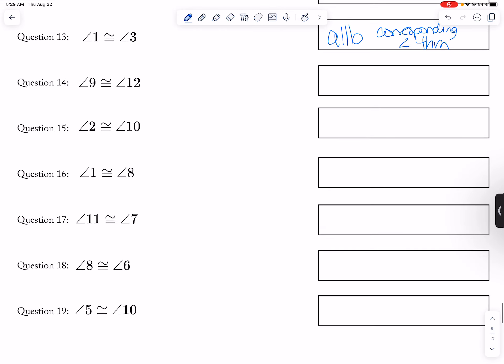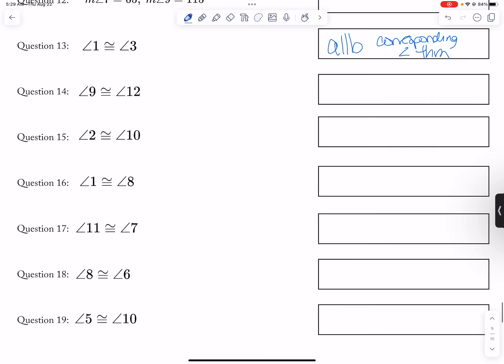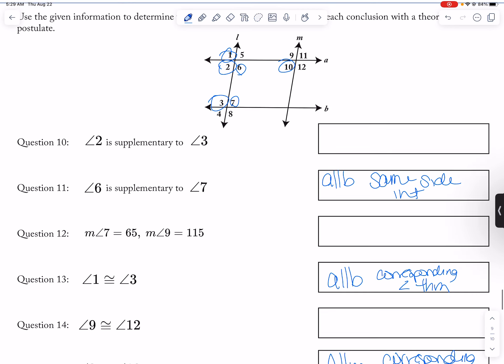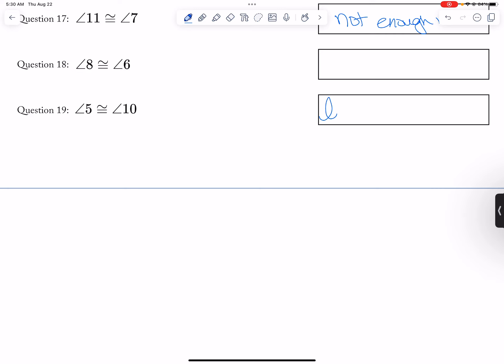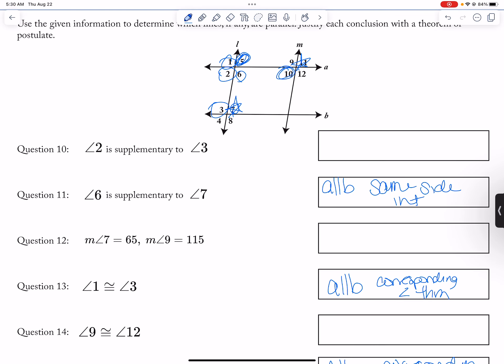And then 15, 2 and 10. That is also corresponding angles theorem, but we're switching parallel lines. And now it's L is parallel to M. And then 17 is not enough info because when I look, here's 11 and 7. And one on the outside and one on the inside, but they're like opposites. It's like a weird situation. Okay. Then 19, L is parallel to M. And this is alternate interior angle theorem because here's 5 and 10 up here. So they're alternate.